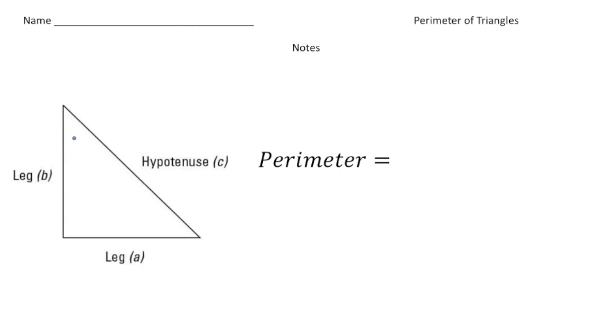So to find the perimeter of this right triangle, we need to add the length of the leg, the length of the second leg, and then the hypotenuse. So let's actually draw a line going all the way around the perimeter of the shape.